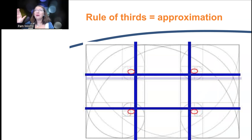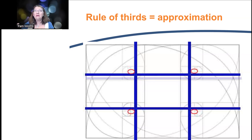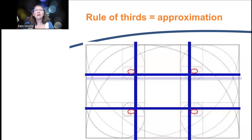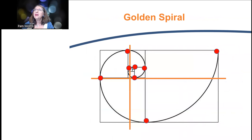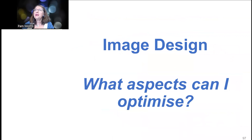If you've got strong horizontal or vertical lines, put them on the thirds. That includes your horizon — put it on the bottom third or the top third. It's rare that a horizon works in the middle; it sometimes does with a square frame, but most of the time it works better on the rule of thirds.